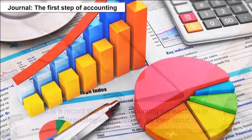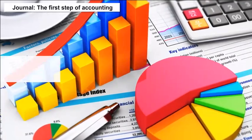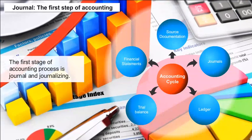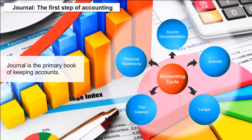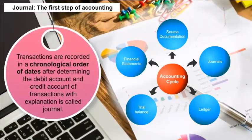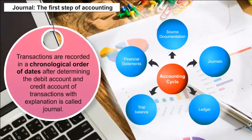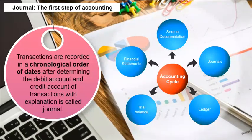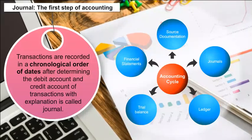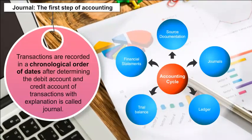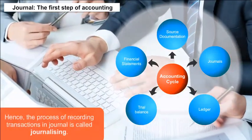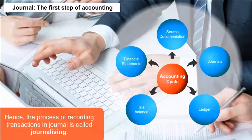The first stage of the accounting process is journal and journalizing. Journal is the primary book of keeping accounts. The book wherein transactions are recorded in a chronological order of dates, after determining the debit account and credit account of each transaction, with explanation, is called a journal. Hence, the process of recording transactions in a journal is called journalizing.